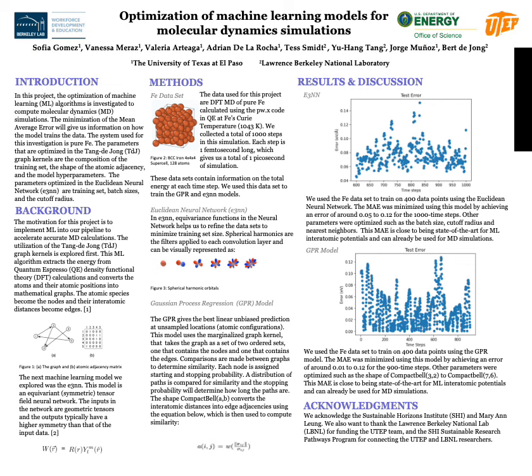For our results, we are comparing the mean average error of the Euclidean neural network and the GPR to train our datasets. For the Euclidean neural network, we have a training set of 400 data points and 600 test points already trained using this model. The test error varies from 0.05 to around 0.12, which concludes that we can use this model for molecular dynamic simulations.